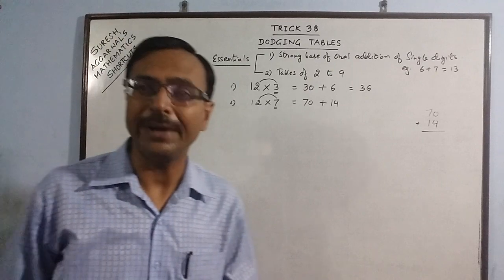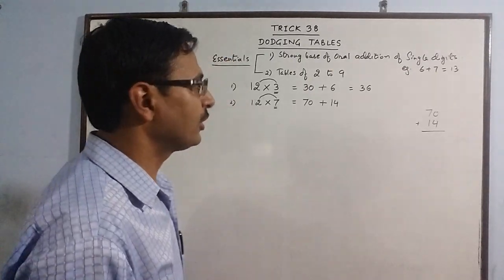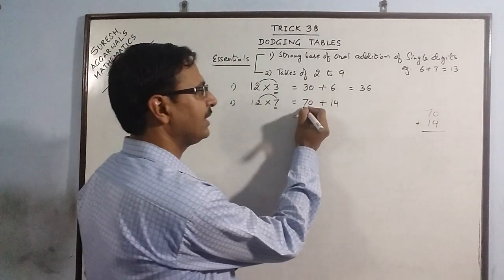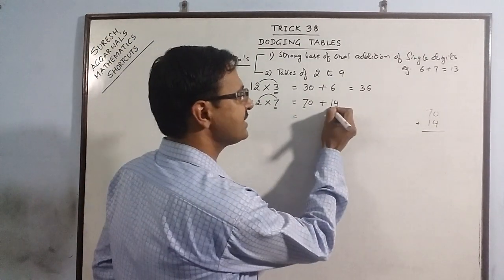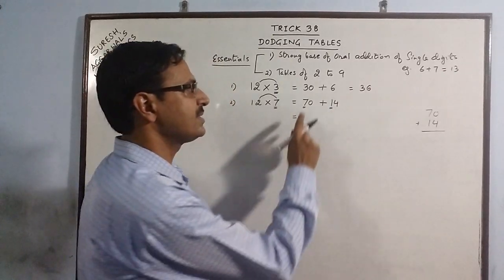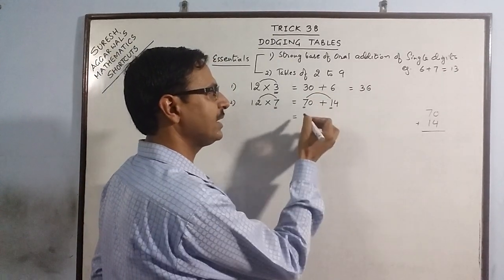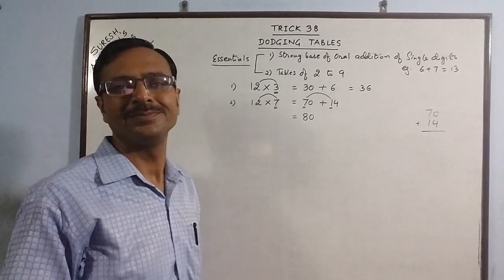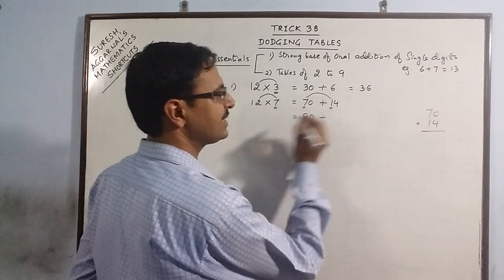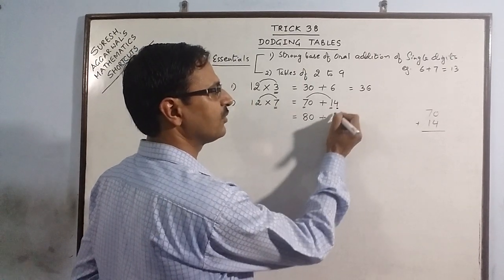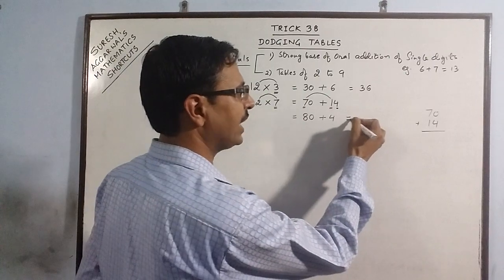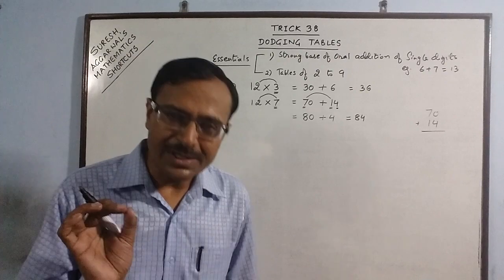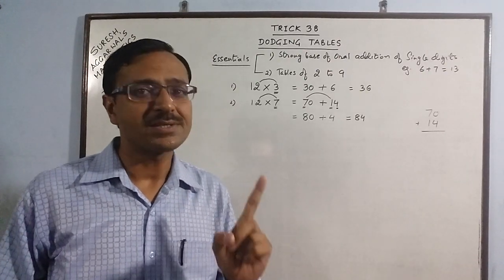When we have to add 70 and 14, the child has to be taught not to add like this. He has to do this mentally. Here the tenth digit is 7, tenth digit is 1, 7 plus 1 is 8. Again he puts a 0 and adds this digit 4, giving 84. Two small steps and the problem gets solved.